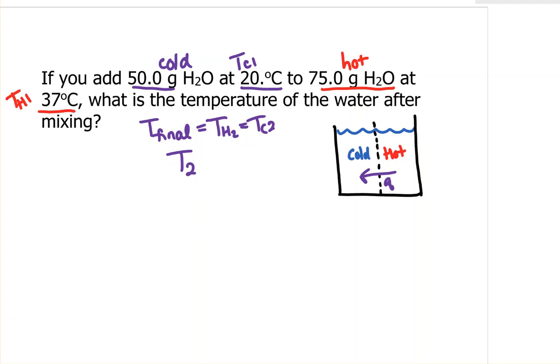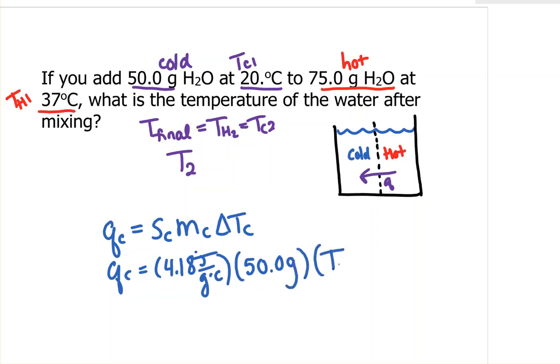What can we do with this information? We're used to using the equation q equals S m c delta T. Let's start with what the cold water does. For T2, I'm just going to call that T since it's what we're solving for. And T1 for the cold water will be 20.